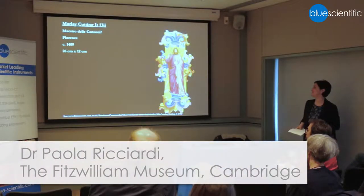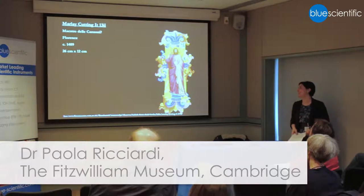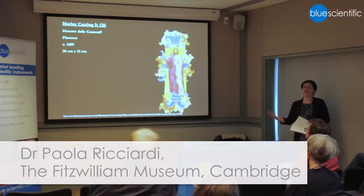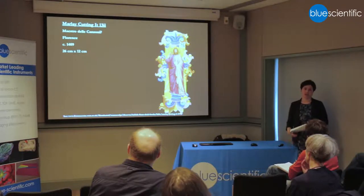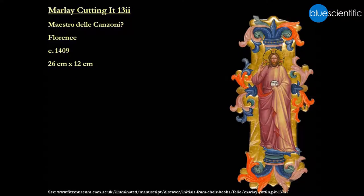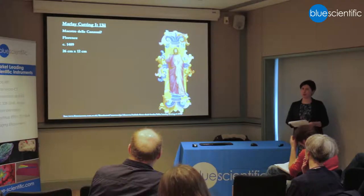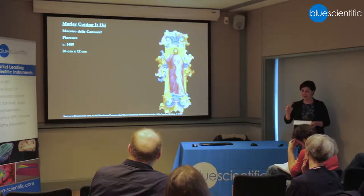I'll show some examples and try to see what benefits we've gained from the use of macro XRF scanning on some of the objects we've analyzed. In this specific case, it's just a small fragment, and I'm using it as an example to illustrate the importance of knowing what to look for and what to look at when you're looking through your data.